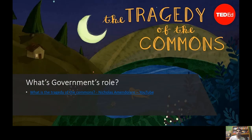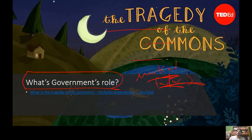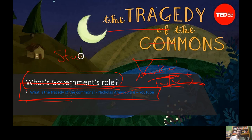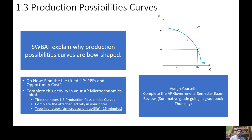The role of government, according to economists, is in addressing market failures — and we'll talk about those later — and for the protection of private property rights. There's a video about the tragedy of the commons that should make clear the importance of private property rights. Remember AP Government content — Hobbes and the state of nature, where life was nasty, brutish, and short — and then we entered a social contract and formed government. Government has a role in rectifying market problems and market failures.